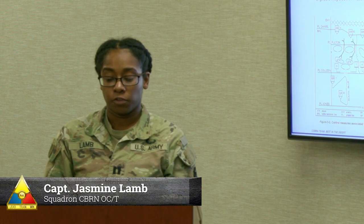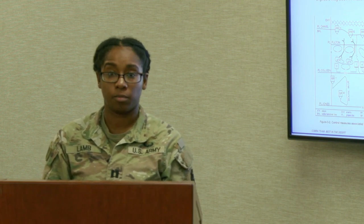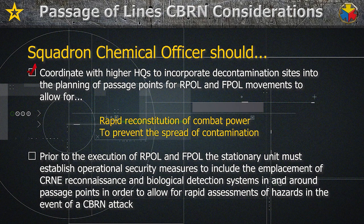The Squadron Chemical Officer should anticipate the needs of the squadron to enhance the unit's mobility in a CBRN environment. The Chemical Officer should coordinate with higher headquarters to incorporate decontamination sites into the planning of passage points for RPOL and FPOL movements, to allow for rapid reconstitution of combat power and to prevent the spread of contamination. Prior to execution of RPOL and FPOL, the stationary unit must establish operational security measures to include the emplacement of CBRN reconnaissance and biological detection systems in and around passage points, to allow for rapid assessments of hazards in the event of a CBRN attack.